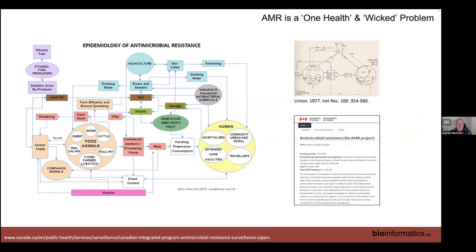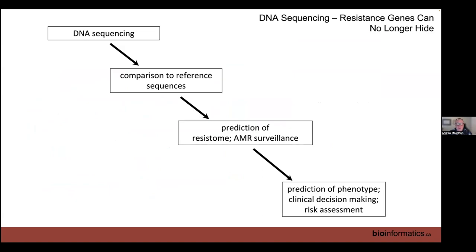The big challenge of controlling AMR and getting surveillance data is that it's not just in the clinic. Antibiotics are used in agricultural settings; resistance genes get into wastewater and the environment; they're involved in agricultural processes and fuel production. In Canada we call this the 'confusagram.' Canada has a major federal effort to sequence across this space. Whether you're working with a pig on a farm, a fish in a stream, or a person in the clinic, you're connected to a much more complicated web.